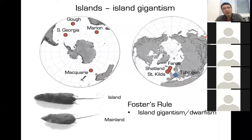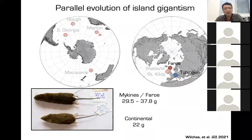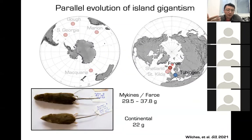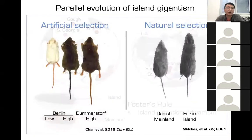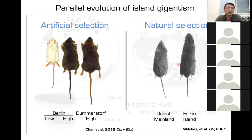By studying these dynamic and unique systems, we can find out about the genes and genetic variants that selection acts on — and that is what really drives evolution. Today I'll illustrate our work by drawing on examples from across a range of topics. The through line from island mice and selection experiments is how we look at this question both broadly and deeply to understand the molecular and genetic basis of evolutionary change.